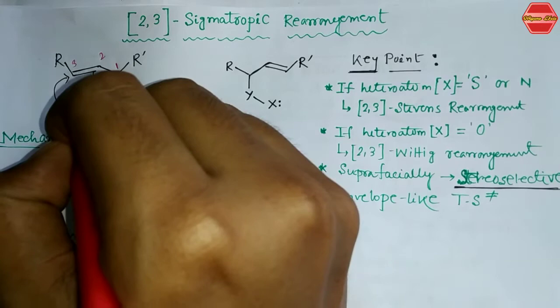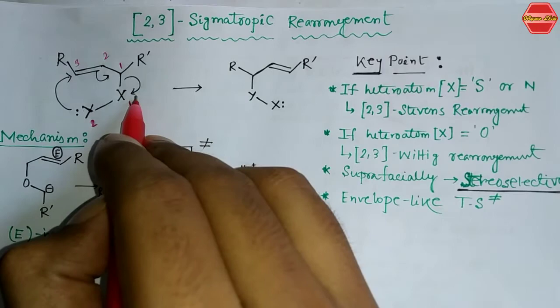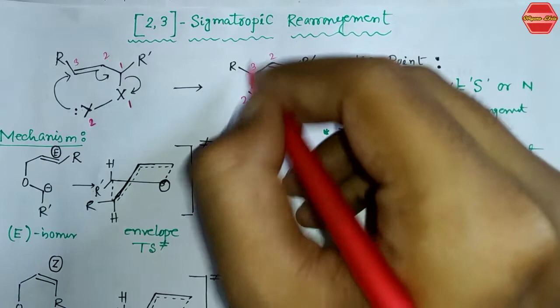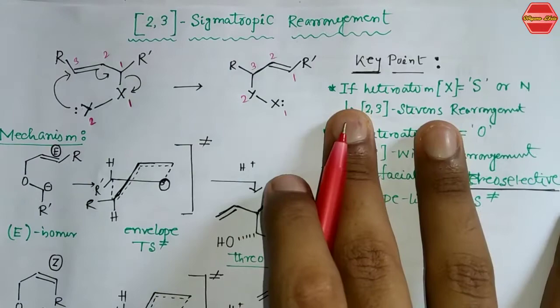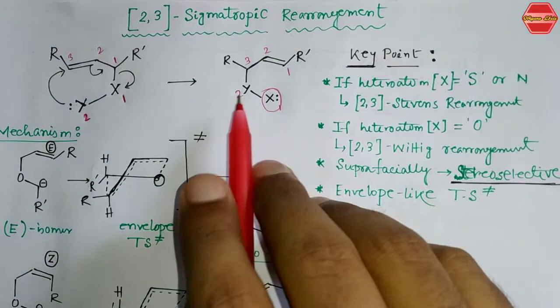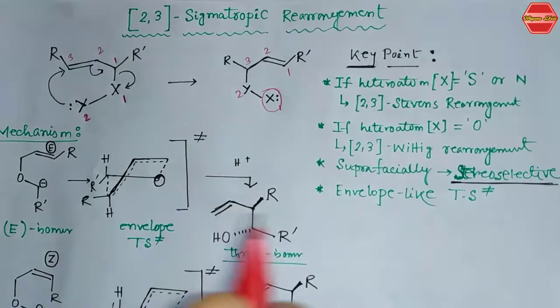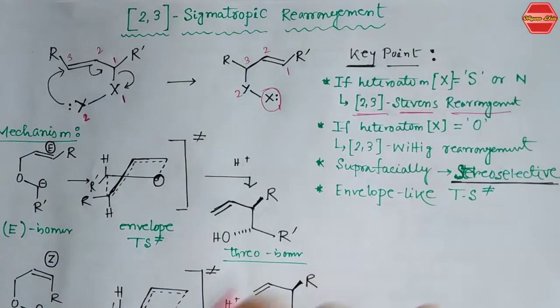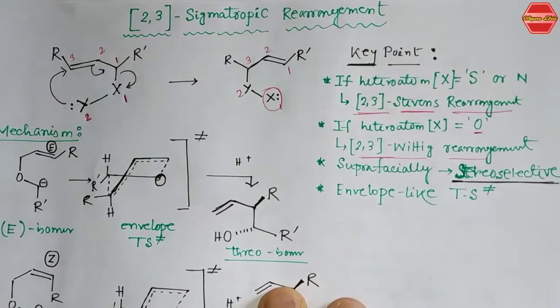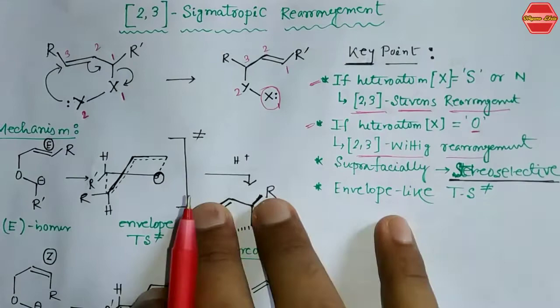There is bond breaking between position 1 and 1, and bond formation between 2 and 3 — that is how 2,3-sigmatropic rearrangement takes place. The lone pair of electrons attacks, bonds migrate, and a 2,3-bond forms. Key points: if the heteroatom X is sulfur or nitrogen, it is called 2,3-Stevens rearrangement. If X is oxygen specifically, it is called 2,3-Wittig rearrangement. We will discuss both.